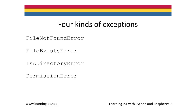Four kinds of exceptions can occur when a file is opened. The FileNotFoundError will occur if an attempt is made to open a file in read-only mode that does not exist. The FileExistsError will occur if an attempt is made to open a file in x mode that already exists — this is useful if you want to ensure that the contents of a file are not accidentally overwritten. The IsADirectoryError will occur if an attempt is made to open a directory. The PermissionError will occur if an attempt is made to open a file for which you do not have the appropriate permission.